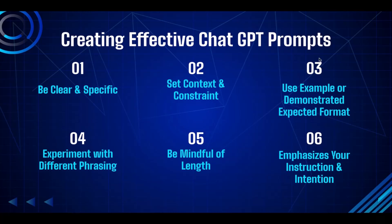The fifth aspect: be mindful of length. Sometimes you're using ChatGPT to generate a pretty complex output, and you might have a paragraph-long prompt or five to six sentences. That's totally fine, but it's going to be much better if you're willing to break down that complex prompt into smaller, simpler pieces so ChatGPT is better able to understand what you actually want.